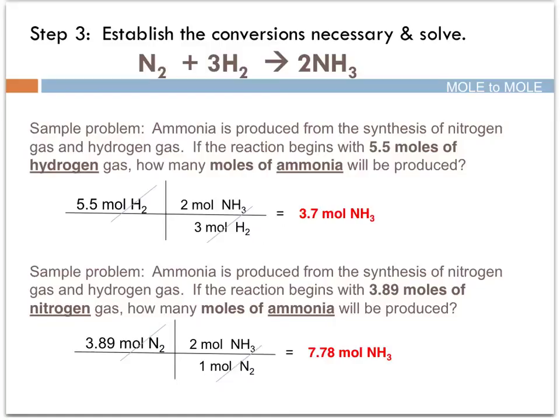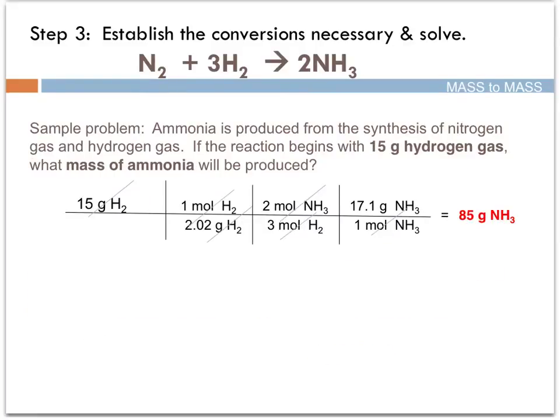Here's another example. Both of these are based on the same balanced chemical equation, but starting with different starting materials. Again, with the same equation, our beginning material is the mass of hydrogen gas, and we're solving for the mass of ammonia. Notice this is a four-step problem.